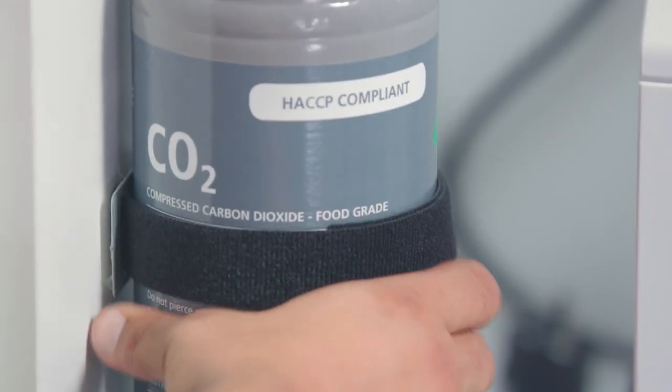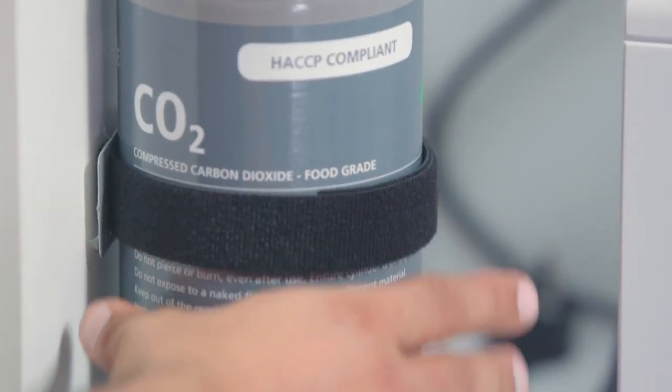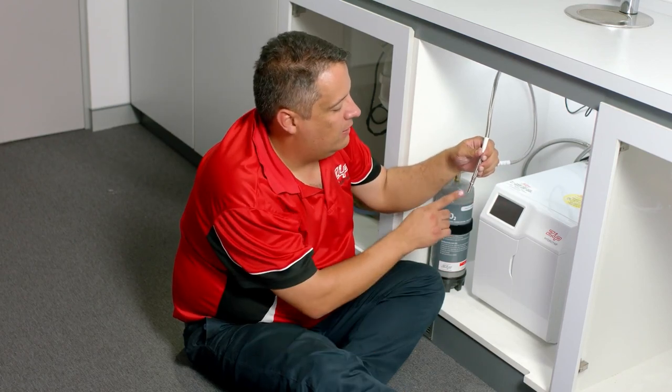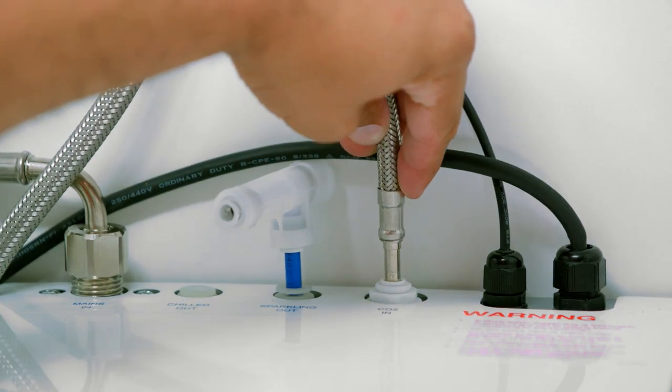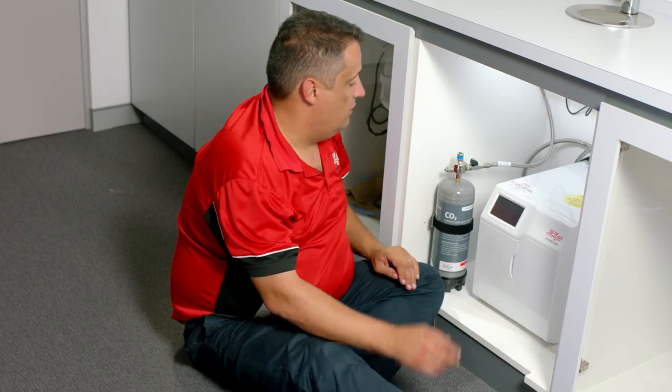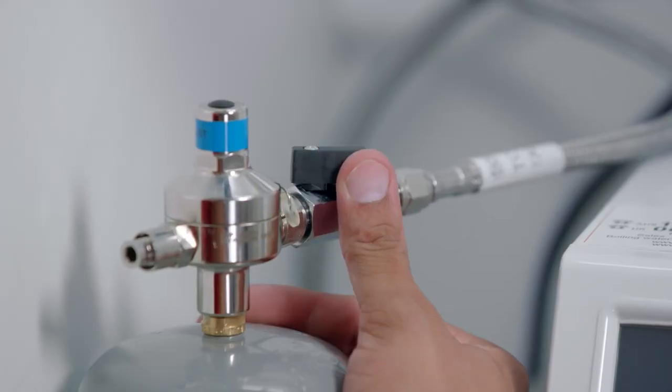Secure it with a Phillips head screw supplied in the box. The final connection of your CO2 is to fit the male end of the gas hose into the CO2 in on the command centre. Once connected, you can turn the CO2 gas on.